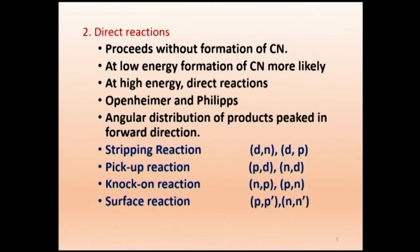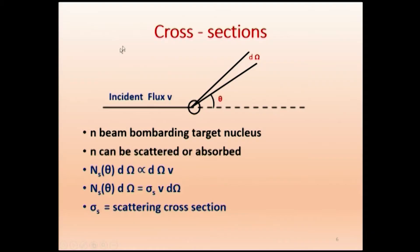Now we come to an important parameter in nuclear reactions: the cross section. When we send a beam of neutrons to a target, we want to know how many reactions will take place — for example, to produce cobalt-60 for medical therapy, we need to know how many hours to run the machine. This leads to the concept of cross section.